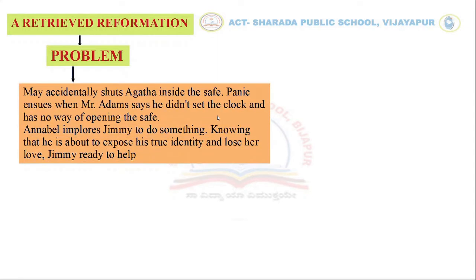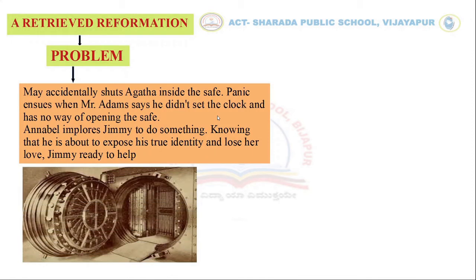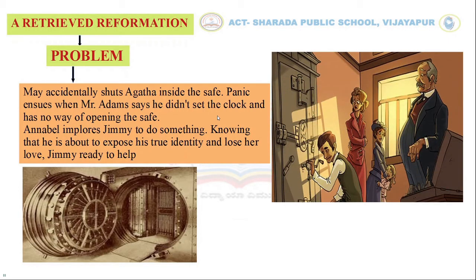Now let us look at the problem of this lesson. May accidentally shuts Agatha inside the safe. Panic ensues when Mr. Adam says he didn't set the clock and has no way of opening the safe. Annabelle implores Jimmy to do something, knowing that he is about to expose his true identity and lose her love — but Jimmy is ready to help.